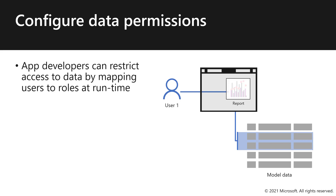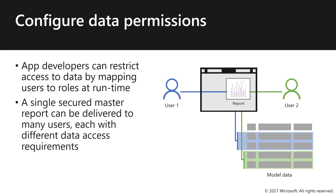There is a salesperson responsible for sales in Australia, so they only see Australian sales results. When User 2 accesses the report, he can only see the data that is relevant for him — for example, data that is only for the Israeli region. So a single secured master report can be delivered to many users, each with different data access requirements.